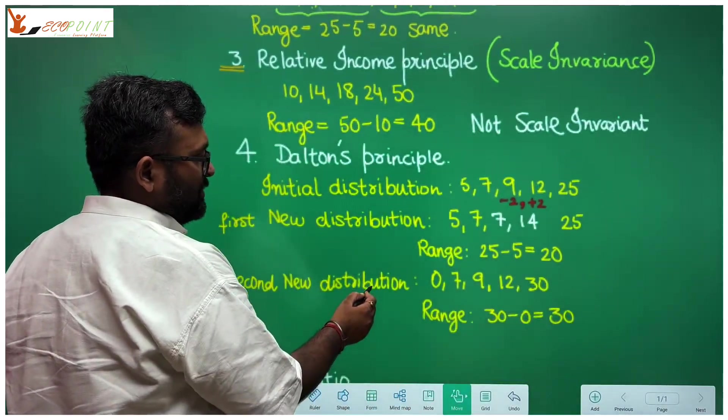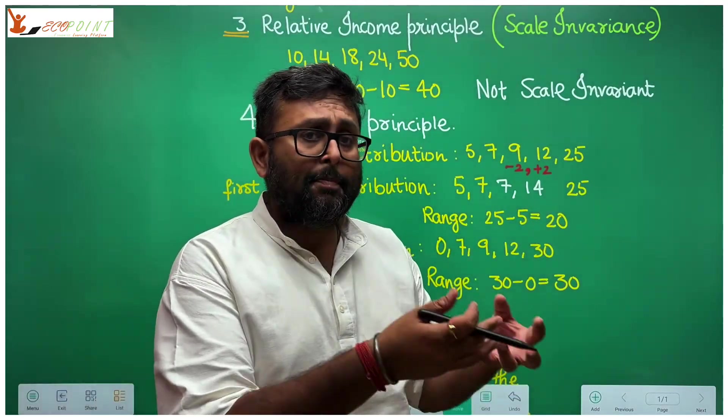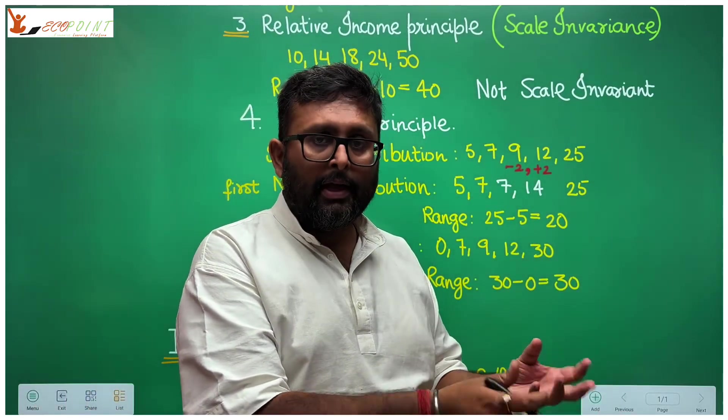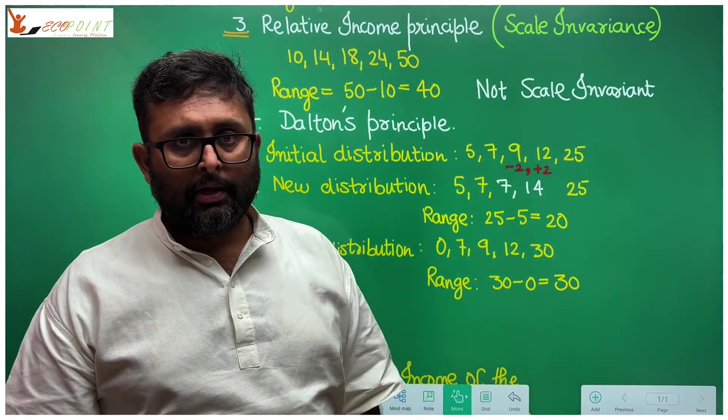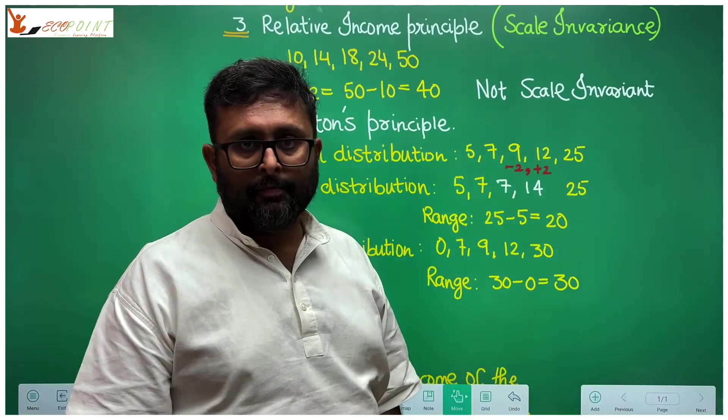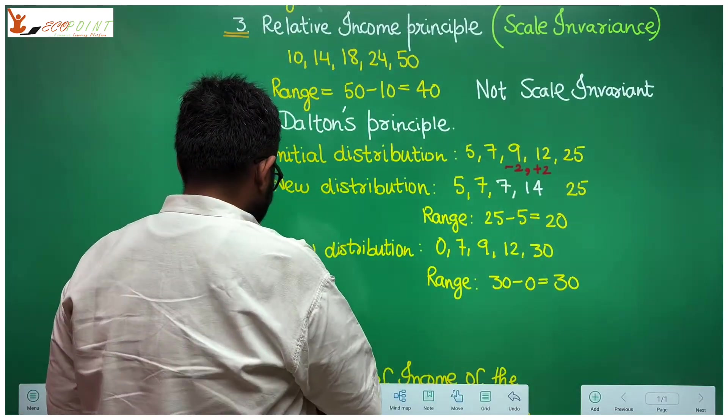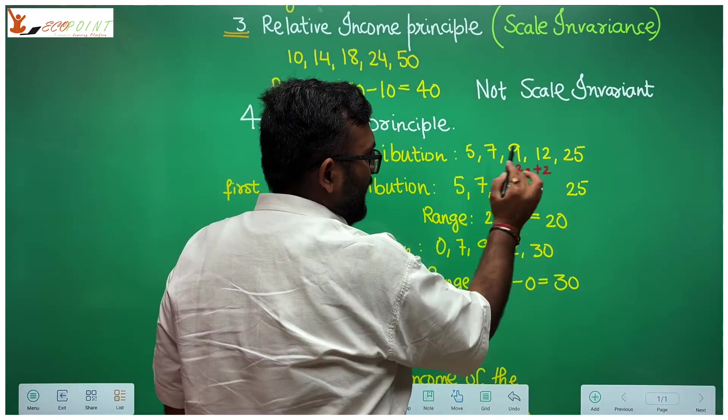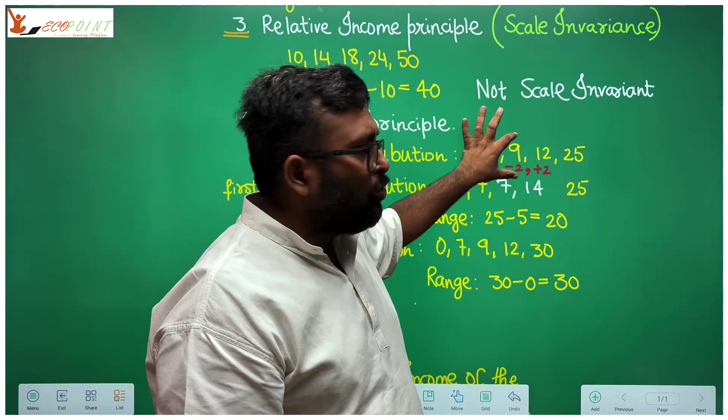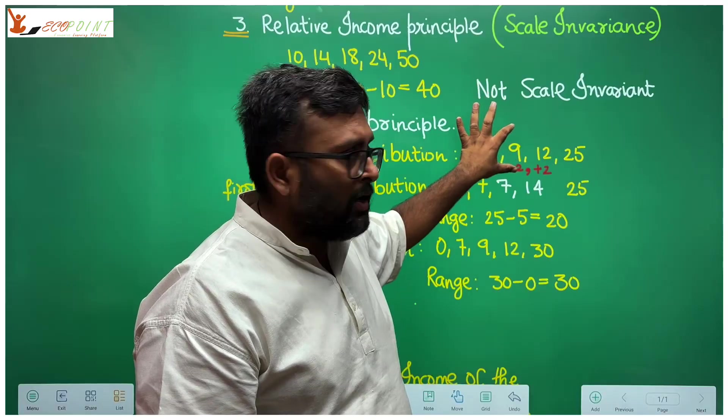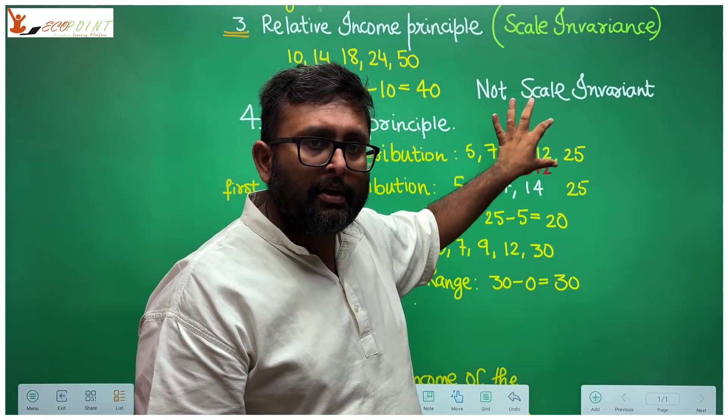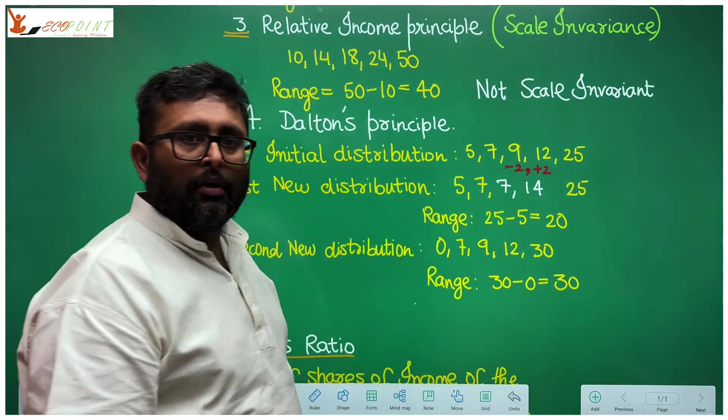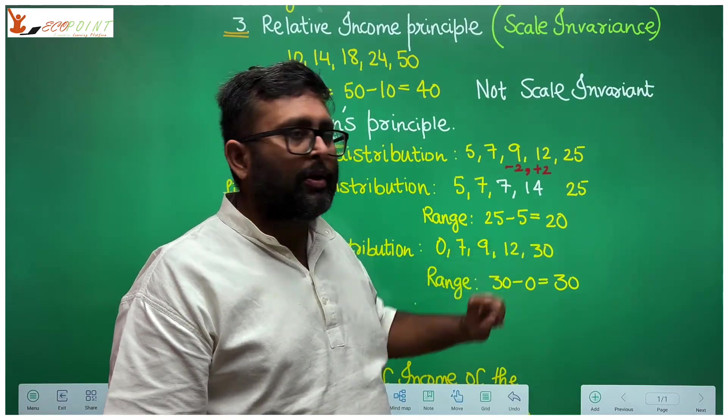Then you have Dalton's principle. I hope you remember what Dalton's principle was telling you. If you take up income of the poorer individual, and you give that much income to the richer individual, inequality should increase. So supposedly, you have the initial distribution, which is 5, 7, 9, 12, 25. What I have done is, I have taken two middle individuals, 9 and 12. I have taken two from 9 and added this 2 to 12. So I have taken two rupees from the third individual, a poorer individual, and added two rupees to the fourth individual, a richer individual. The new distribution is 5, 7, 7, 14, 25. What is the range now? Range is 25 minus 5, which is 20.